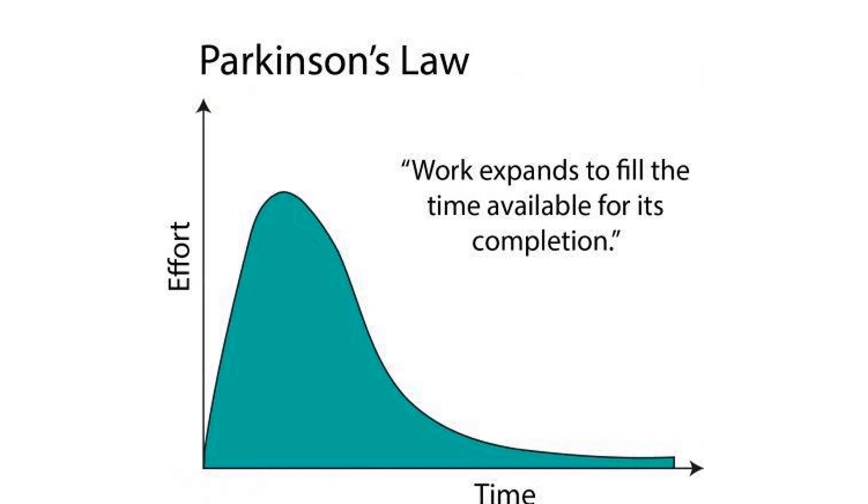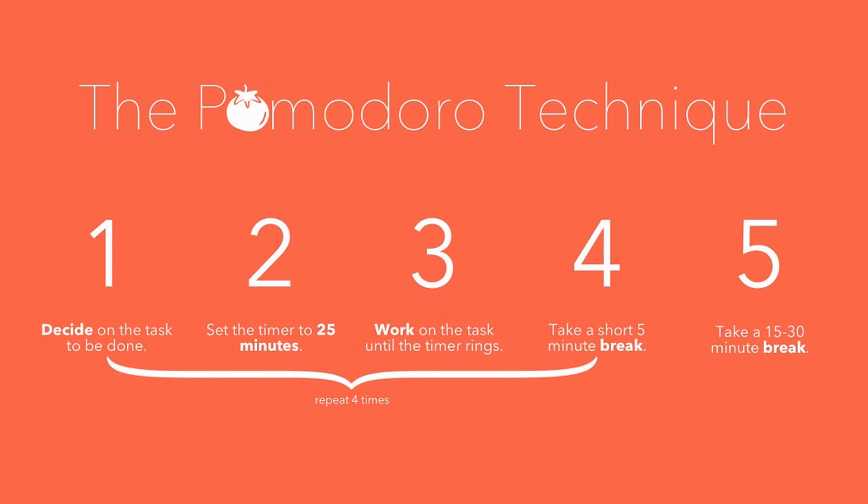One technique is the Pomodoro technique in which you decide on a task, set a timer to 25 minutes and work on the task until the timer rings. Take a short break and repeat the cycle four times, followed by a 20 minute break. The science behind this technique is that it instills a sense of urgency, therefore forcing you to be more focused.